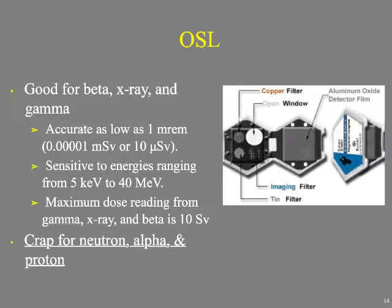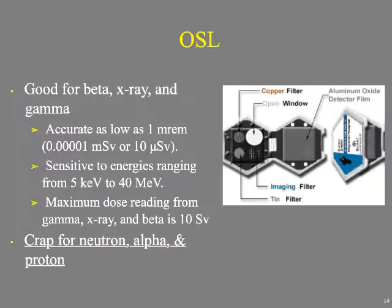OSLs are excellent for beta, x-ray, and gamma radiation. They are accurate down to as low as 1 millirem — that's 10 microsieverts — and are sensitive to energies ranging from 5 keV, which is below the diagnostic spectrum, up to 40 MeV, which is well above anything we use in therapy and into the range of certain gamma rays.